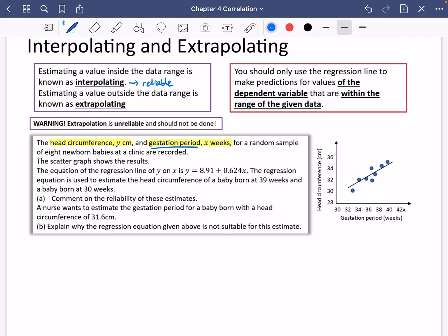The scatter graph shows the results. The equation of the regression line of y on x is y equals 8.91 plus 0.624x. The regression equation is used to estimate the head circumference of a baby born at 39 weeks and a baby born at 30 weeks. Comment on the reliability of these estimates.